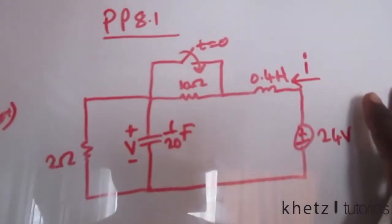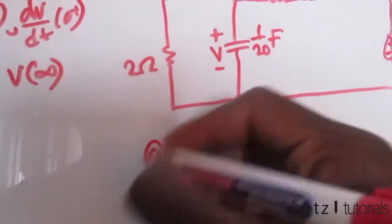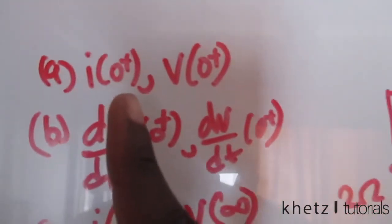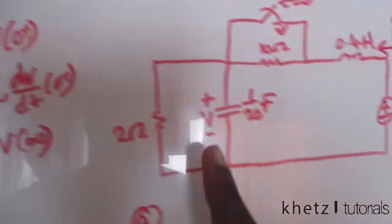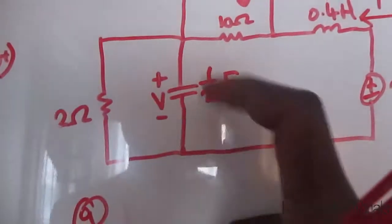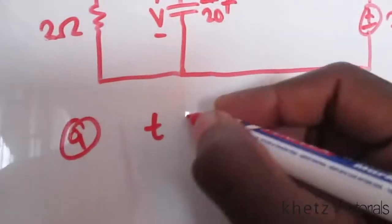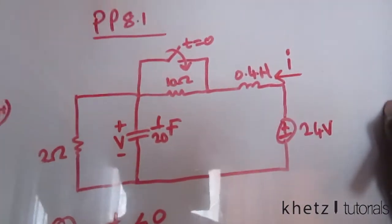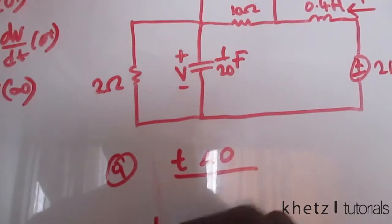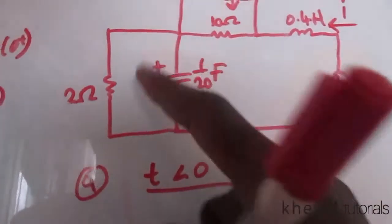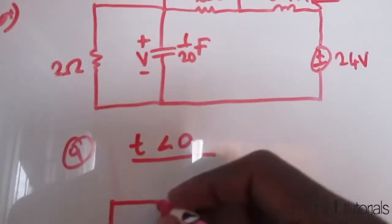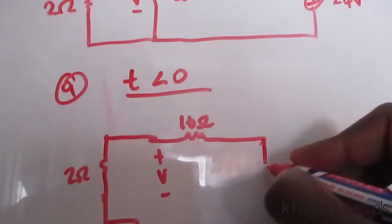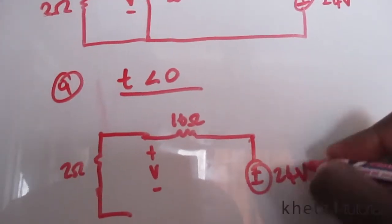This is the circuit we have. For the first part, we have to find i(0⁺), which is the current just after zero, and v(0⁺). At time less than zero, we assume that this circuit had actually reached steady state. At steady state, a capacitor becomes an open circuit and an inductor becomes a short circuit — this applies for steady state with a DC source present.